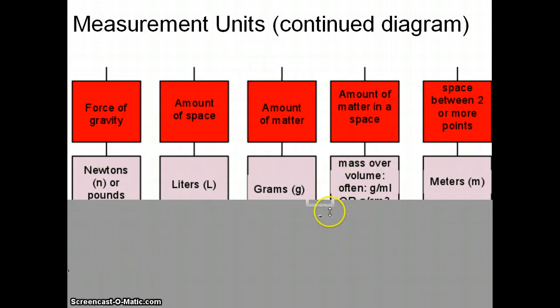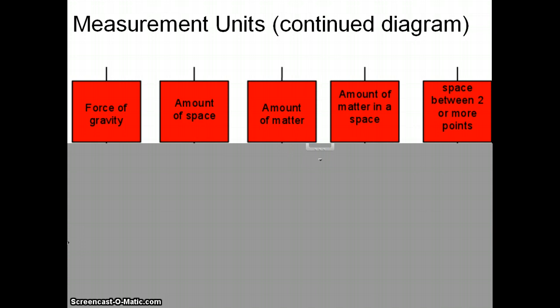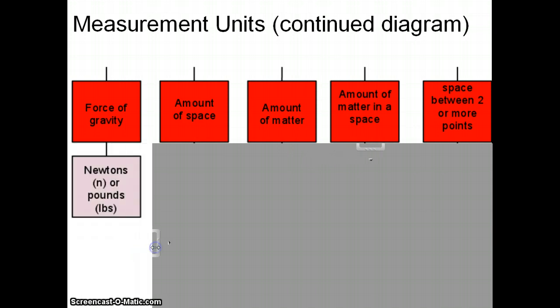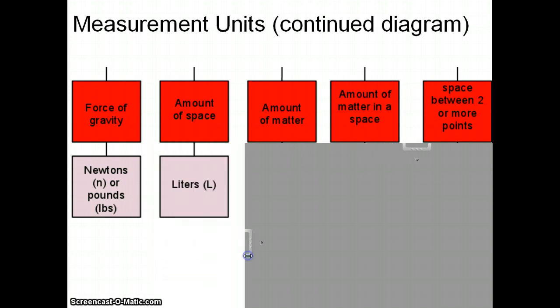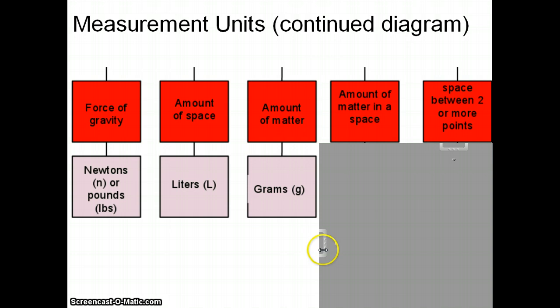The measurement units with each one. So, this is a continuation of the diagram. Weight. The measurement unit will be newtons or pounds. Volume. The measurement unit and metric is liters. You may have seen, like, a two liter bottle of soda. Hopefully, you didn't drink it all by yourself. But, you've seen them. Grams. You may have seen grams on packages of food. Grams is the unit for mass that we will use.